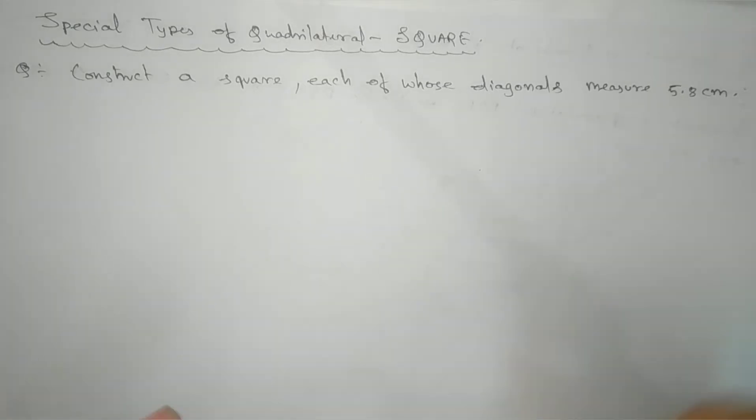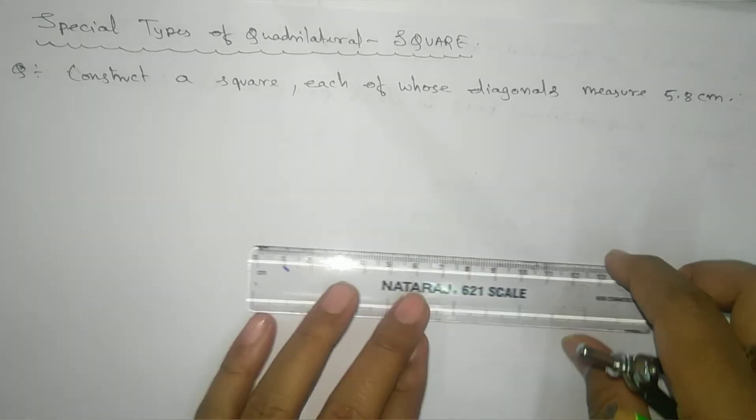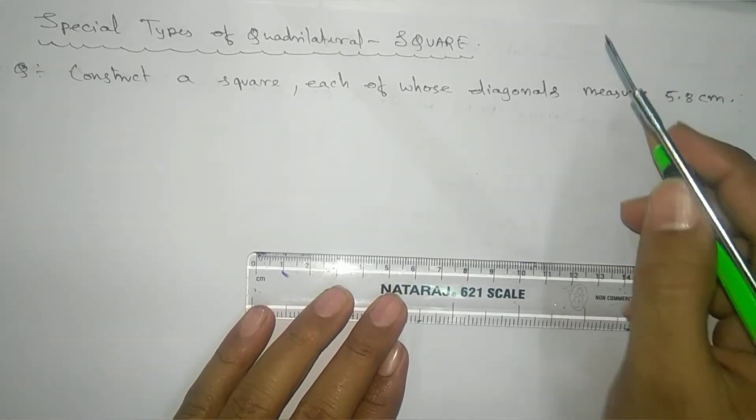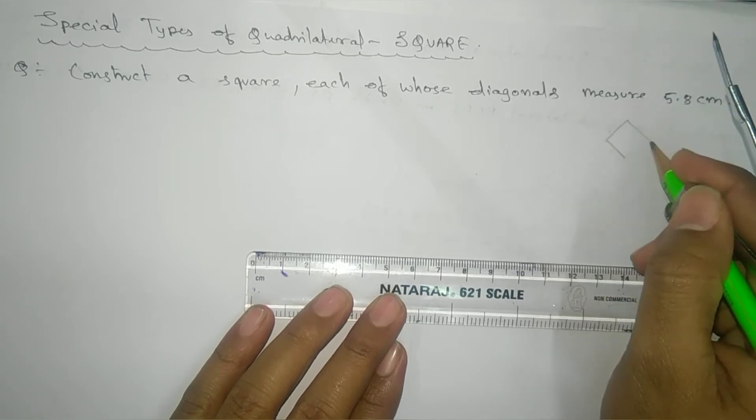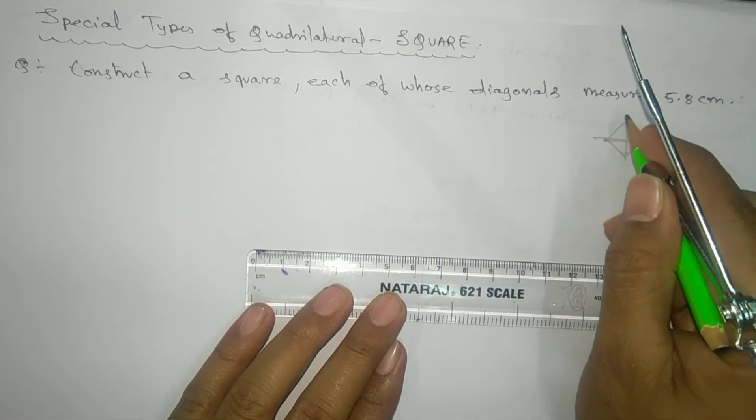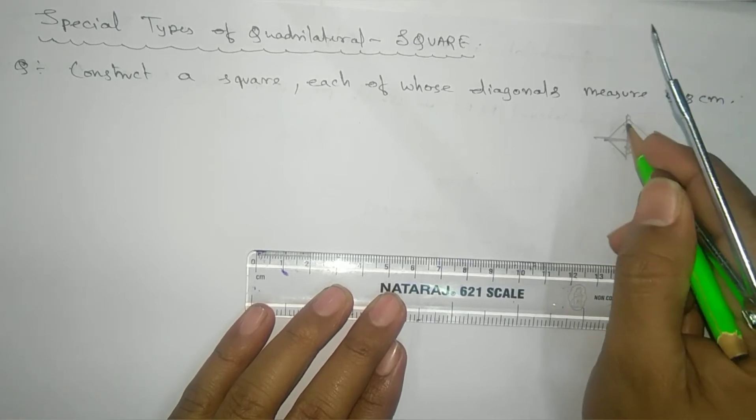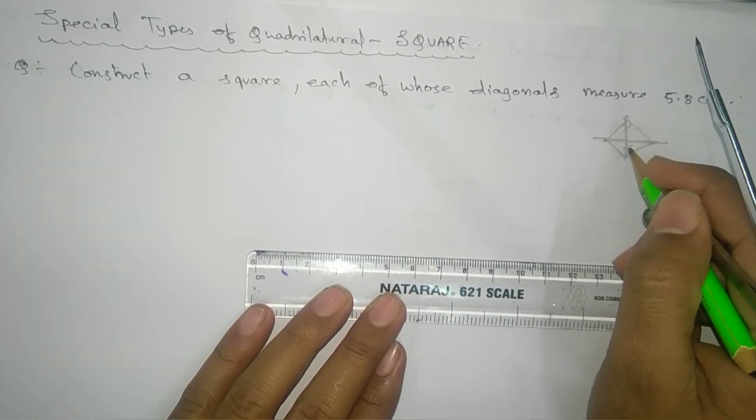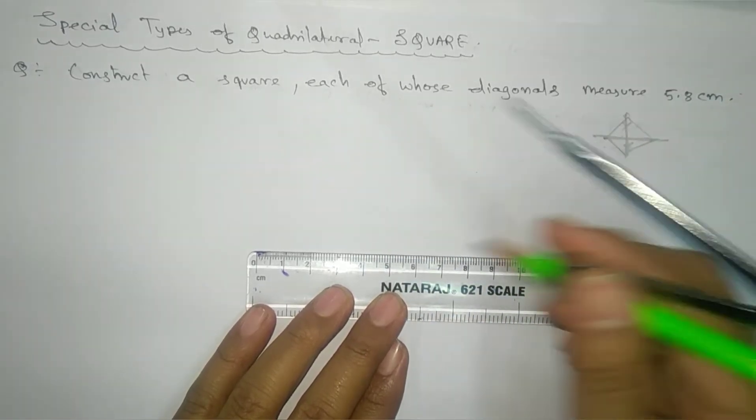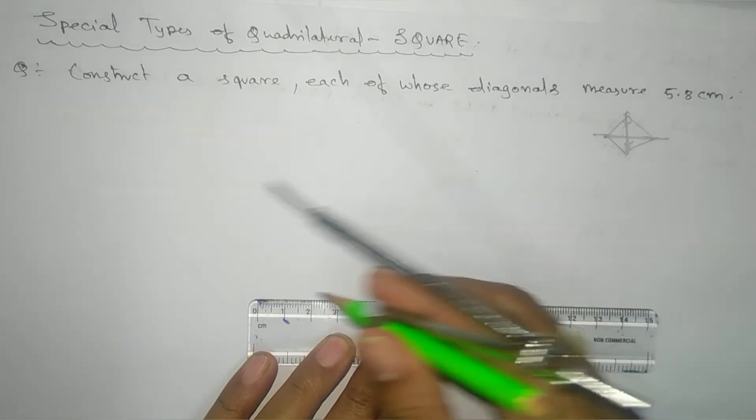What we're going to do is go for the diagonal that is 5.8 cm. We'll take our base as 5.8. This type of construction will have the diagonal part here, and we'll construct another diagonal and then join them. So here we'll go for 5.8.